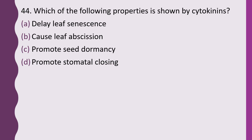Question 44. Which of the following properties is shown by cytokinins? Delay leaf senescence, cause leaf abscission, promote seed dormancy, or promote stomatal closing. The correct answer is option A — it delays leaf senescence.